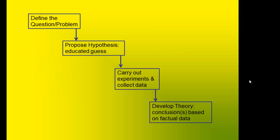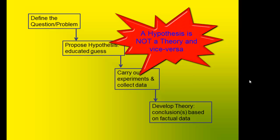The four components of the scientific method are: first, define the question, the problem you're trying to address. Then propose a hypothesis, which is an educated guess. Then carry out experiments and collect data. Then develop a theory, which are conclusions based on factual data you collected from your experiments.